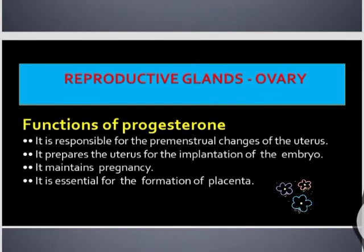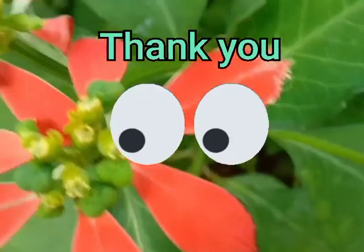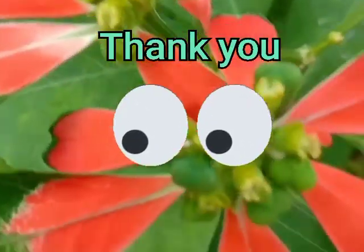Functions of progesterone: it is responsible for the premenstrual changes of the uterus; it prepares the uterus for the implantation of the embryo; it maintains pregnancy; it is essential for the formation of the placenta.